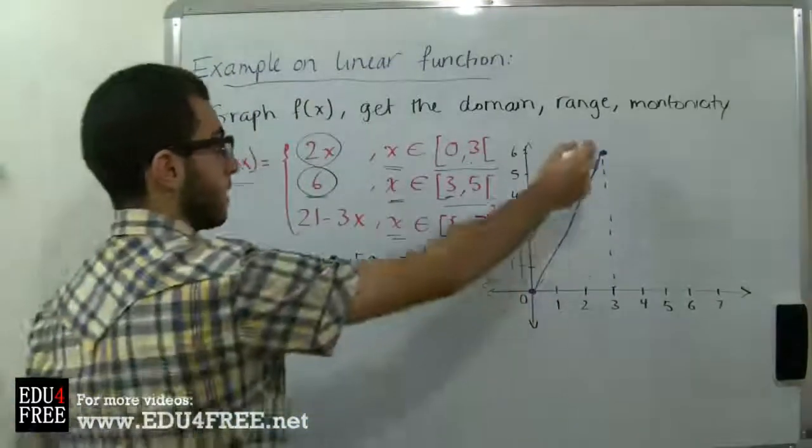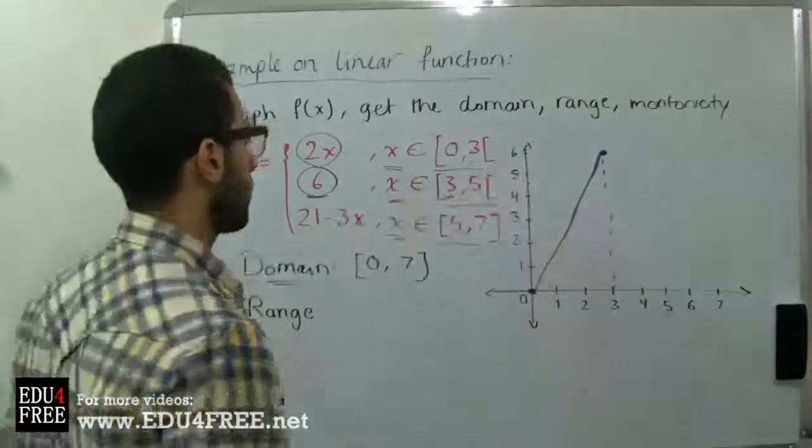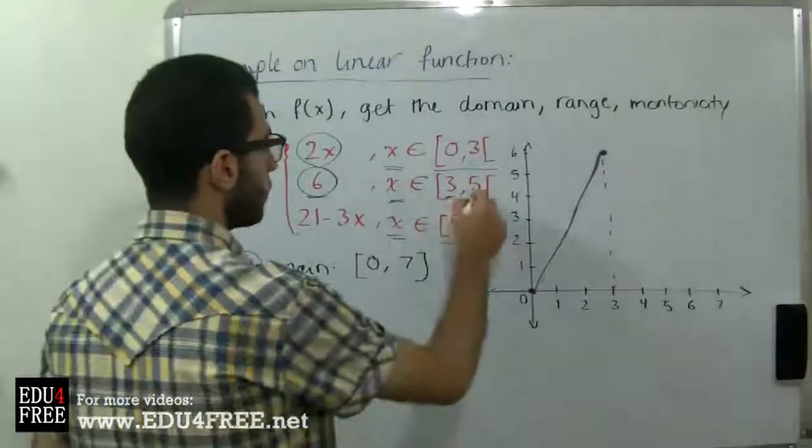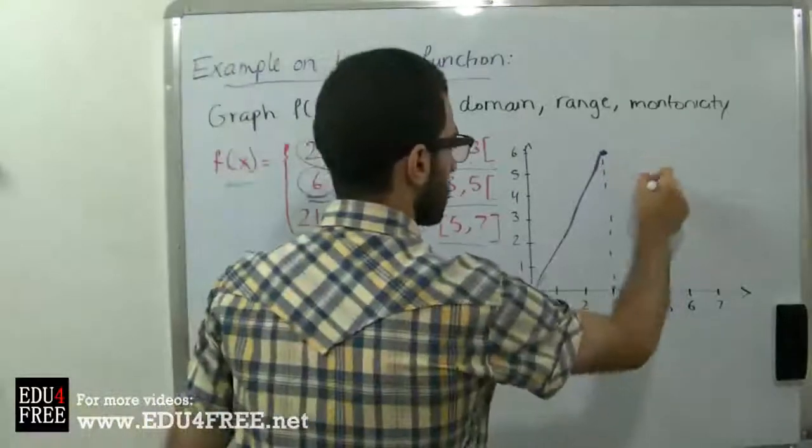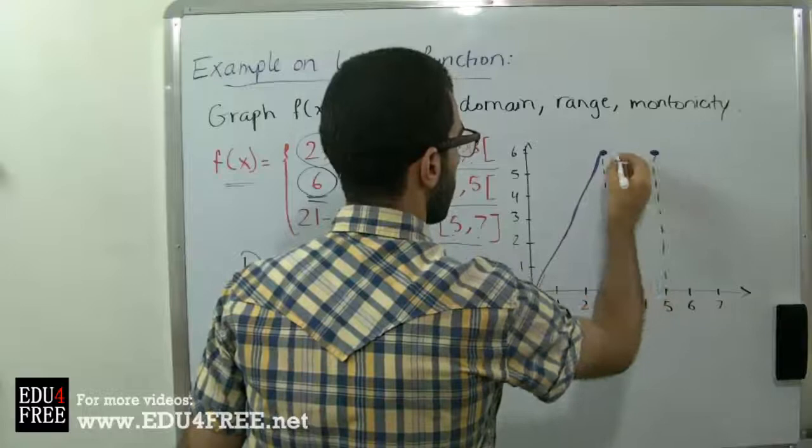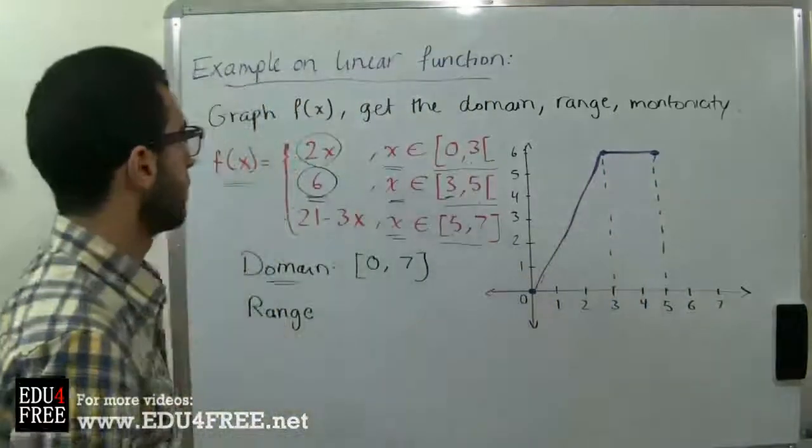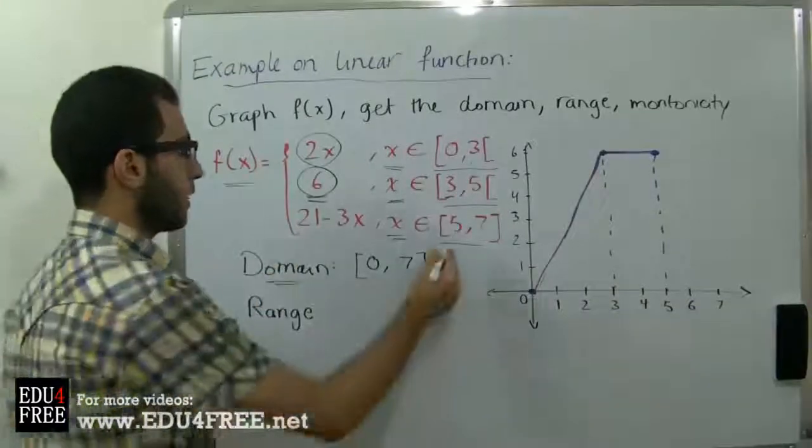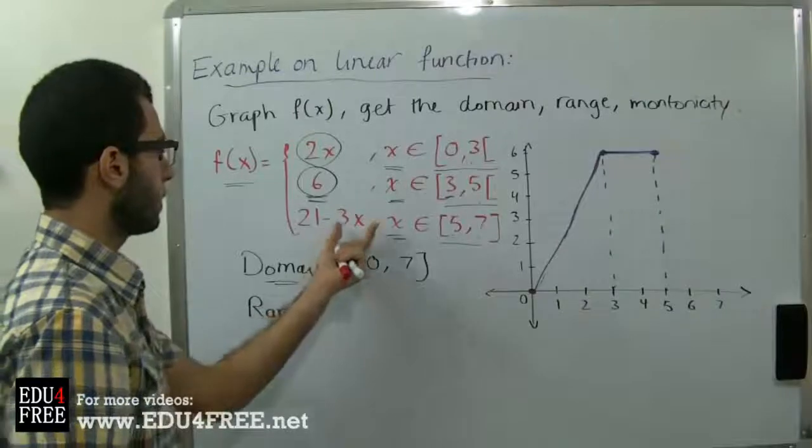From 3 to 5 it's a constant function, so we will have a horizontal line like that. Then beginning from 5 to 7 we have f(x) equals 21 negative 3x.